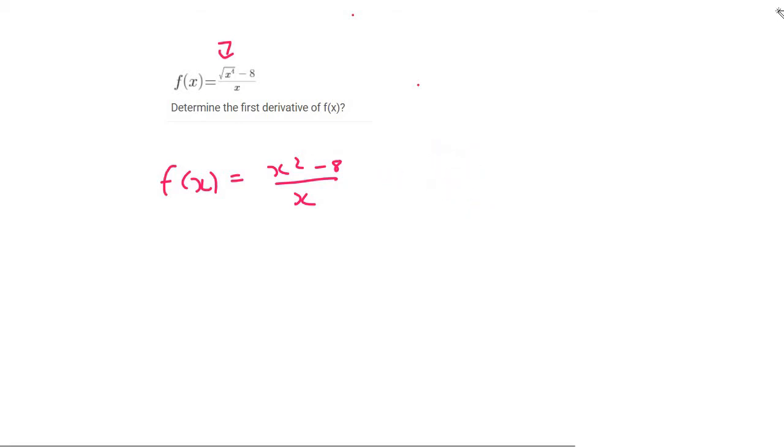What you rather want to do is split them up. So it can be x² over x minus 8 over x and that's going to give us x minus 8 over x.